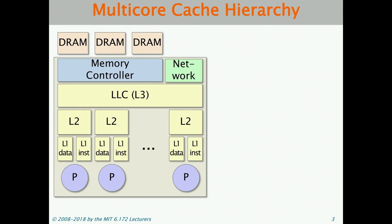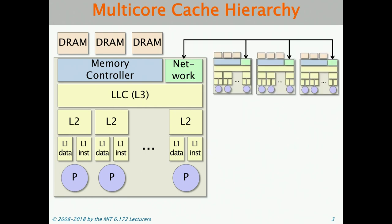Here's what the cache hierarchy looks like for a multi-core chip. We have a whole bunch of processors. They all have their own private L1 caches for both the data as well as the instruction. They also have a private L2 cache, and then they share a last-level cache or L3 cache, also called LLC. They're all connected to a memory controller that can access DRAM. And oftentimes, you'll have multiple chips on the same server, connected through a network.